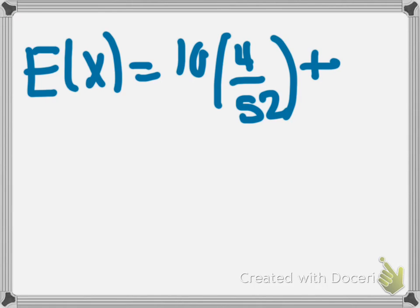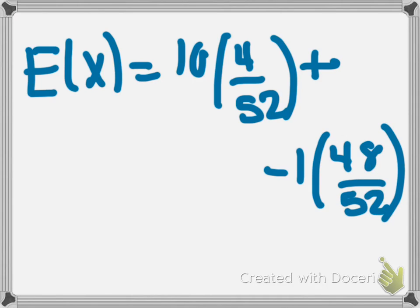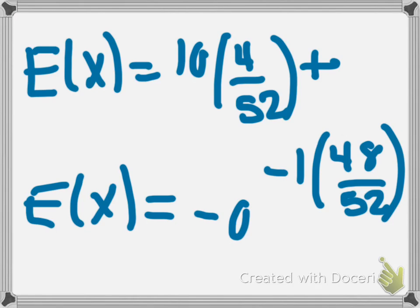Plus, then we also have negative 1, times the probability of that outcome, which is 48 over 52. We then figure that out, type that into our calculator. And we get the expected value of capital letter X, our winning, to be negative 0.15.